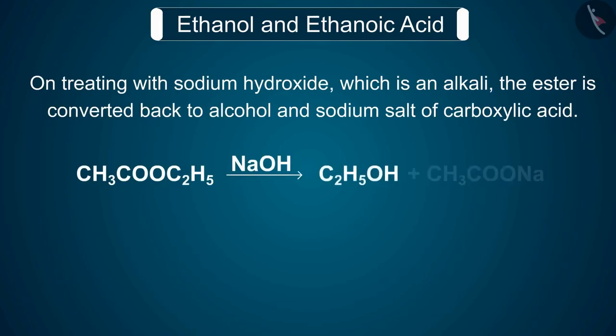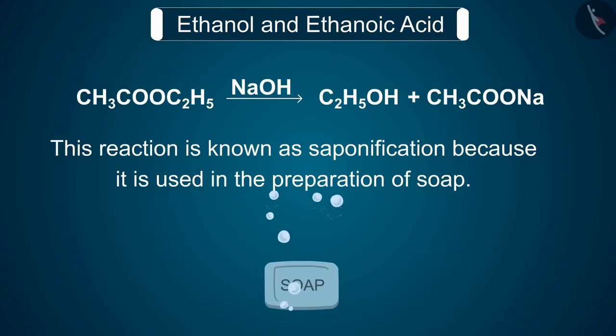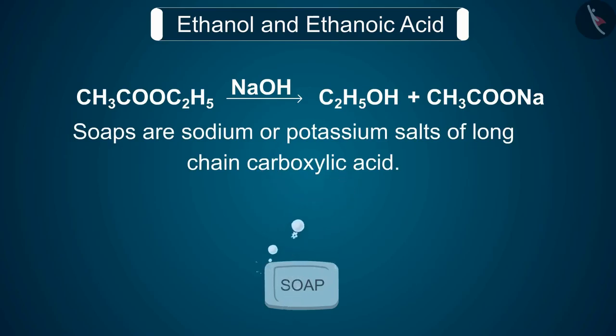On treating with sodium hydroxide, which is an alkali, the ester is converted back to alcohol and sodium salt of carboxylic acid. This reaction is known as saponification because it is used in the preparation of soap. Soaps are sodium or potassium salts of long-chain carboxylic acids.